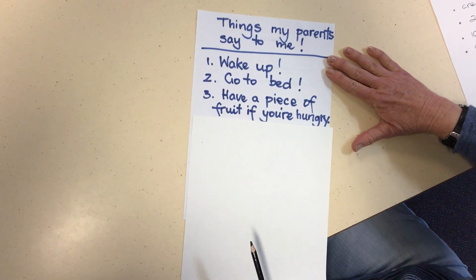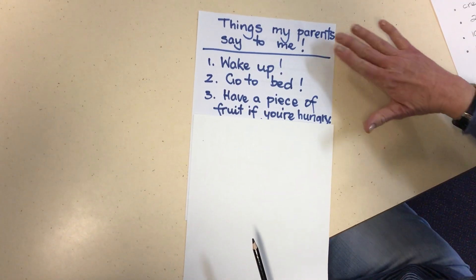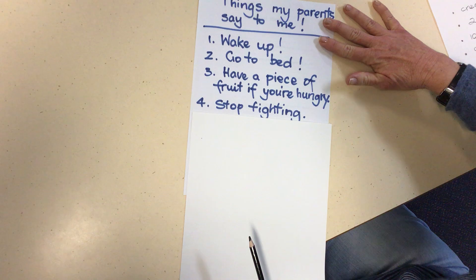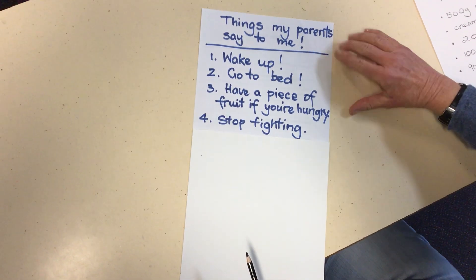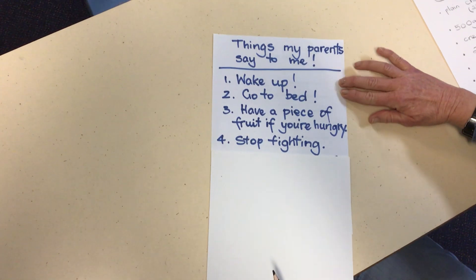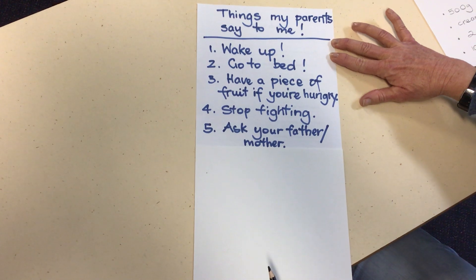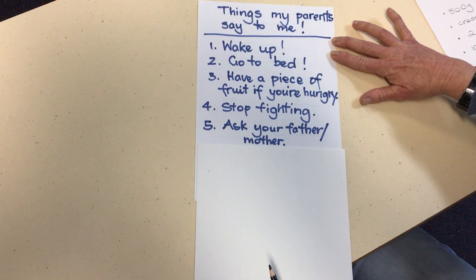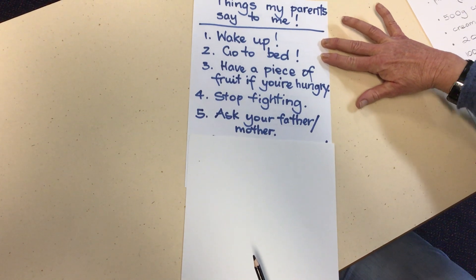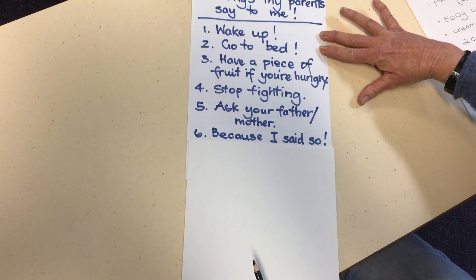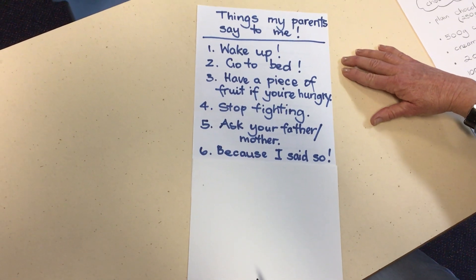Number three: they'd always say to me, 'Have a piece of fruit if you're hungry.' Number four: they'd always say, 'Stop fighting' — which was a bit hard seeing I had three brothers. Number five: depending on who I was asking, they would either say 'Ask your father' or 'Ask your mother' — I wonder if you have that said to you. Number six: often they would say to me, 'Because I said so.'